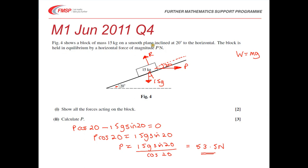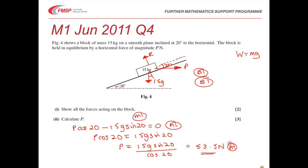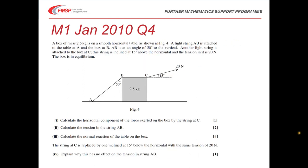For the mark scheme: getting any one force correct on the diagram gives one mark, and getting all correct gives the second. Correctly resolving at least one force gives an M1 mark. Getting the whole equation correct gives an accuracy mark, and rearranging to get the correct answer gives the third mark for that question. Now let's move on to an object on a horizontal surface — again, that's the full question, so take a moment to read it through.